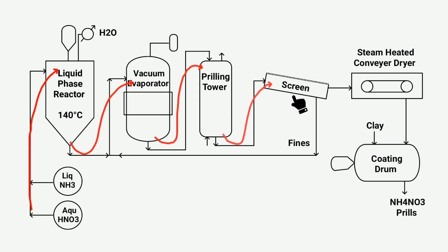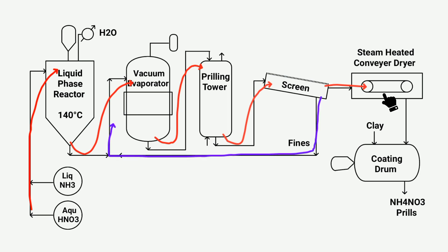The prilling tower yields granular ammonium nitrate with a diameter typically targeted at 1.5 millimeters. A screen functioning as a sieve is employed to assess this. If the diameter is 1.5 millimeters or smaller, the grains pass through and proceed to the steam heated conveyor dryer. If the grain diameter exceeds 1.5 millimeters, it is directed for recycling.